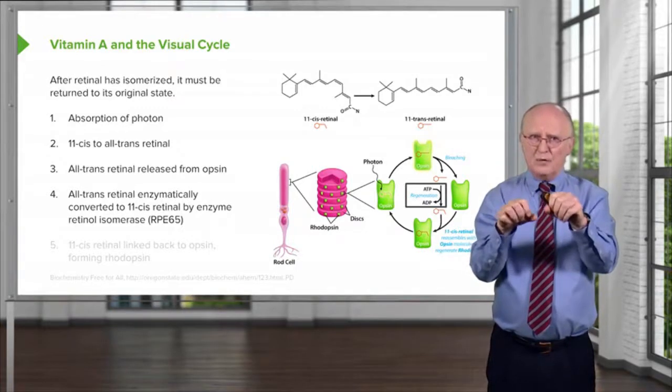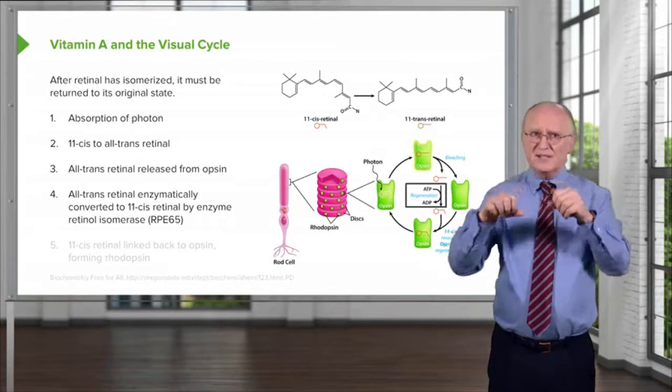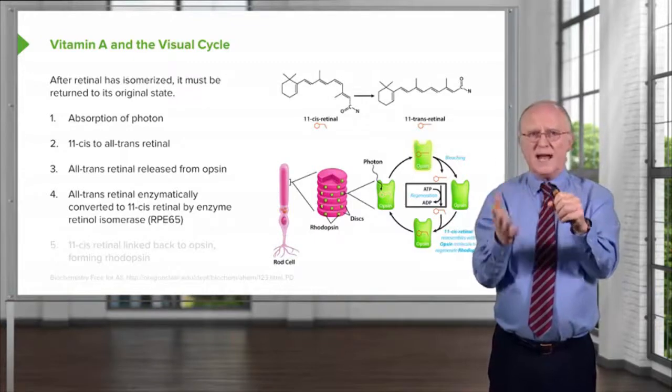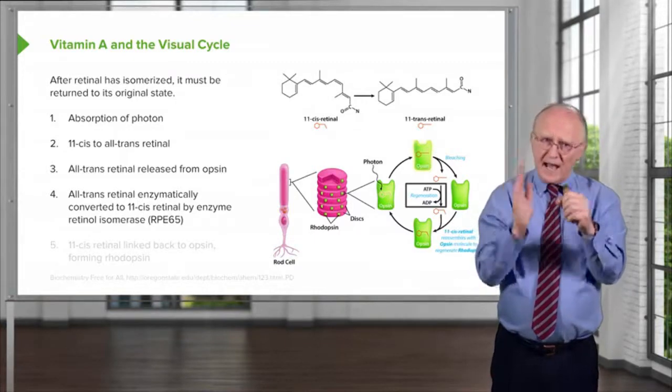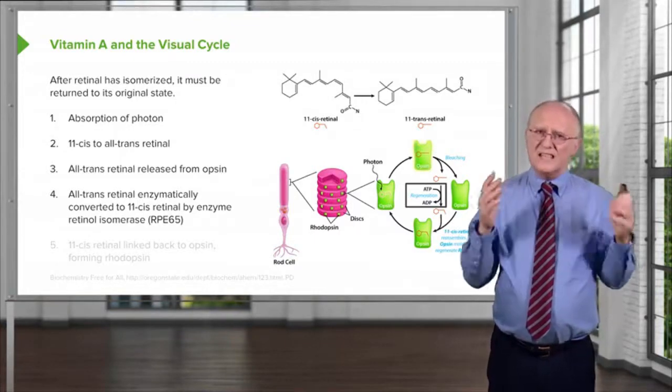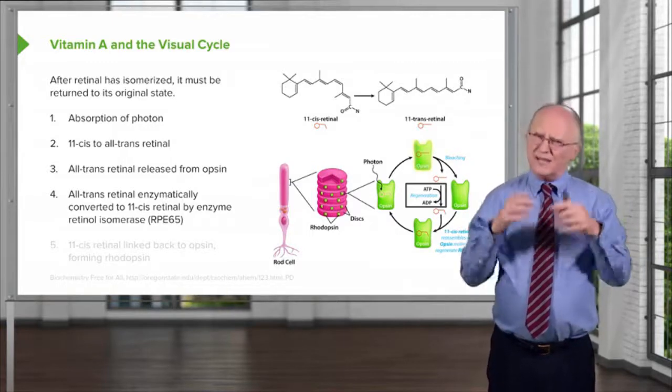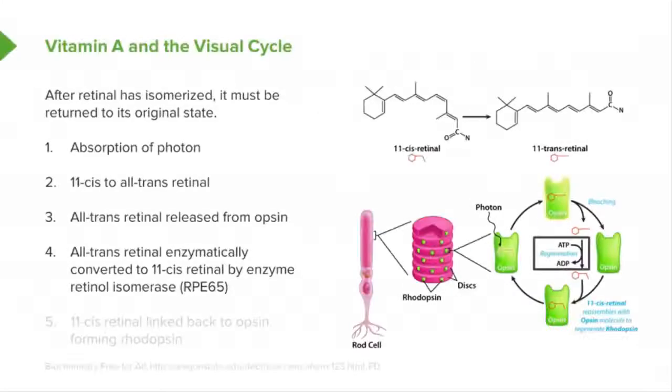Now the retinol isomerase then releases the 11-cis form of retinol, the fatty acid is cleaved off, and the alcohol is oxidized back to an aldehyde. So there's a lot of chemistry that's going on to recreate that 11-cis retinal so that another cycle of vision can occur.